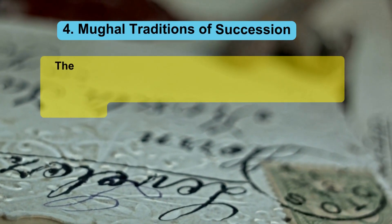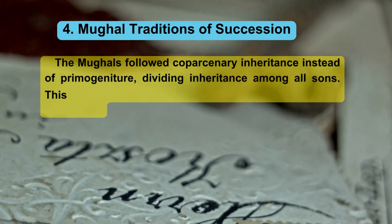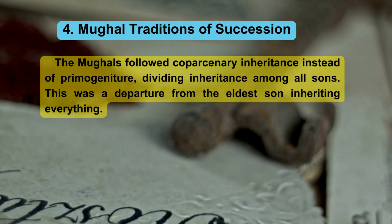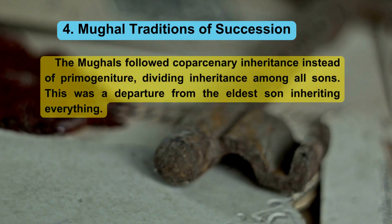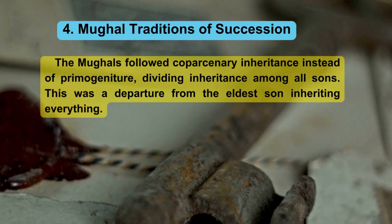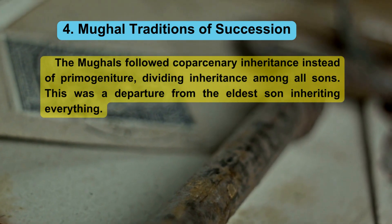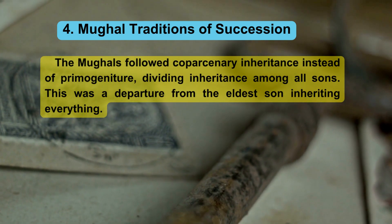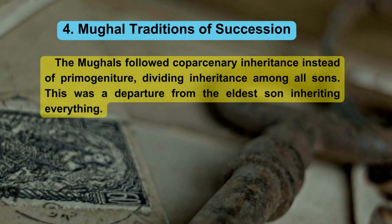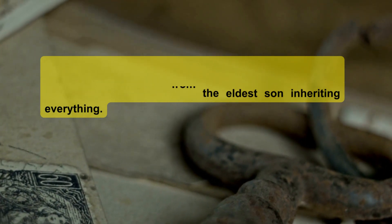4. Mughal Traditions of Succession. The Mughals followed coparcenary inheritance instead of primogeniture, dividing inheritance among all sons. This was a departure from the tradition of the eldest son inheriting everything.